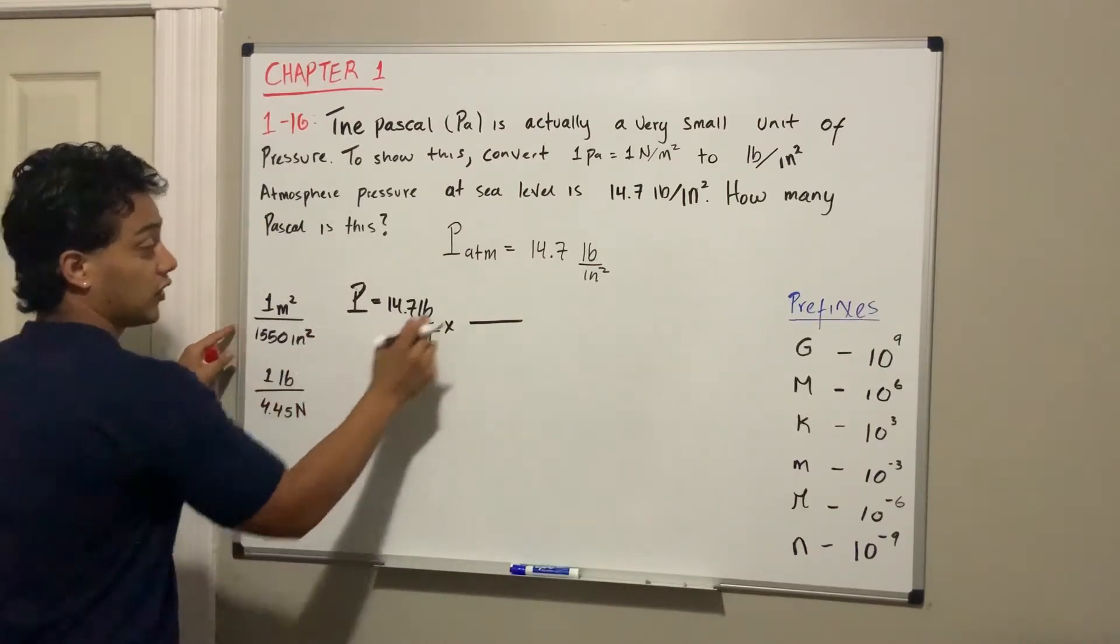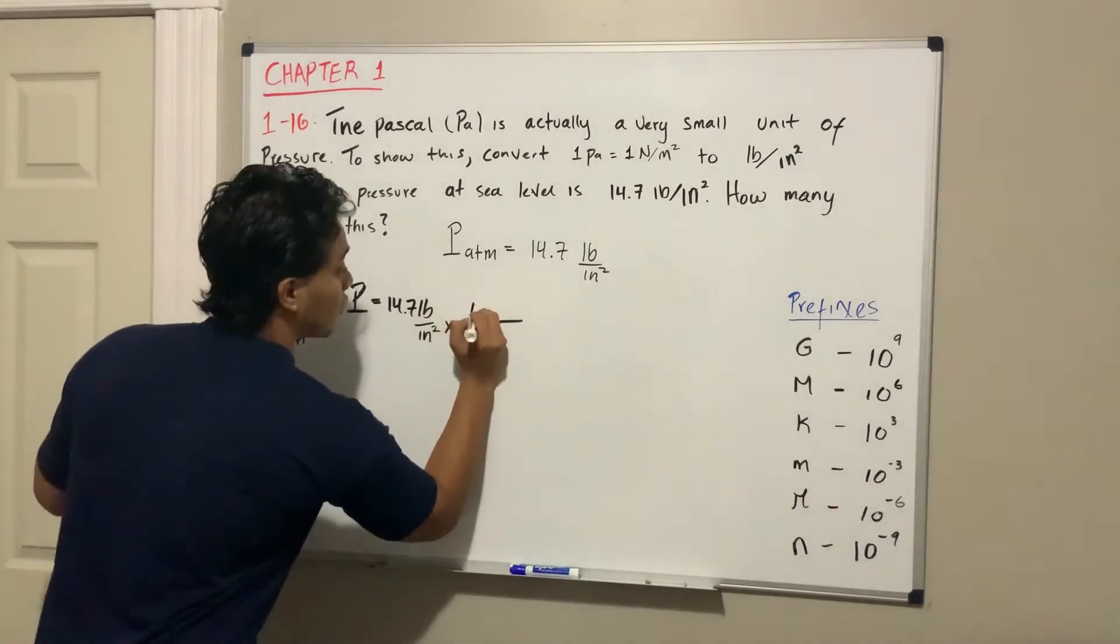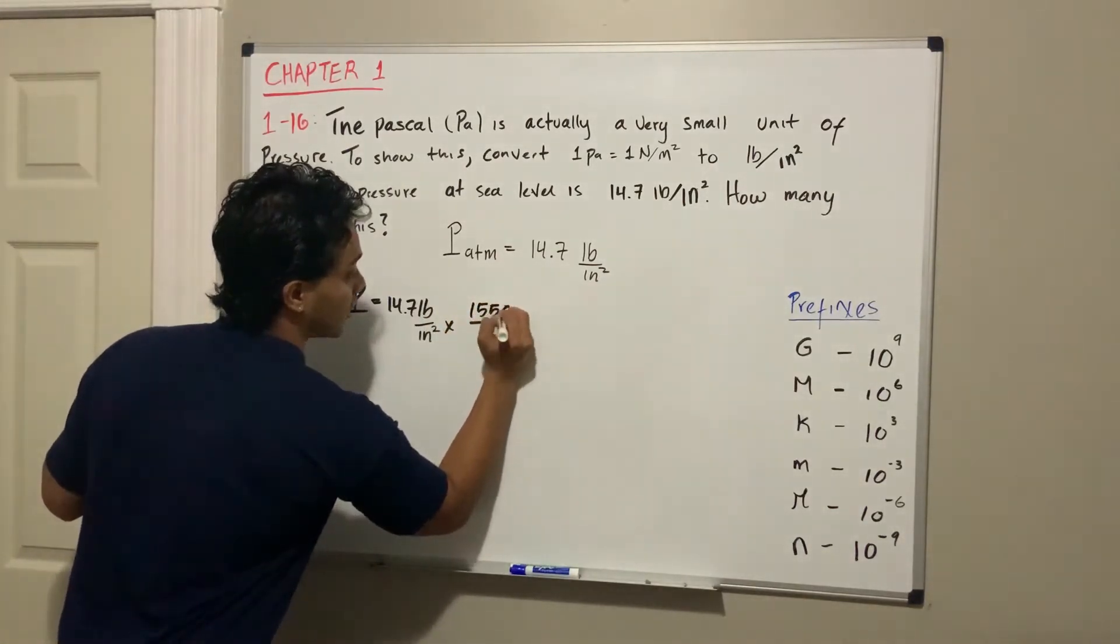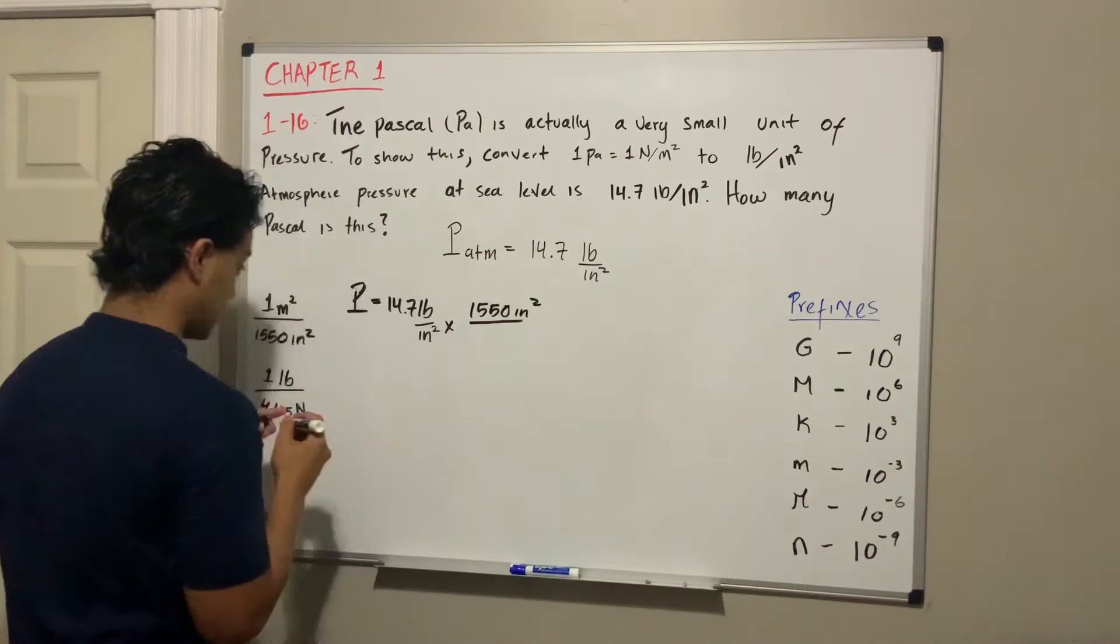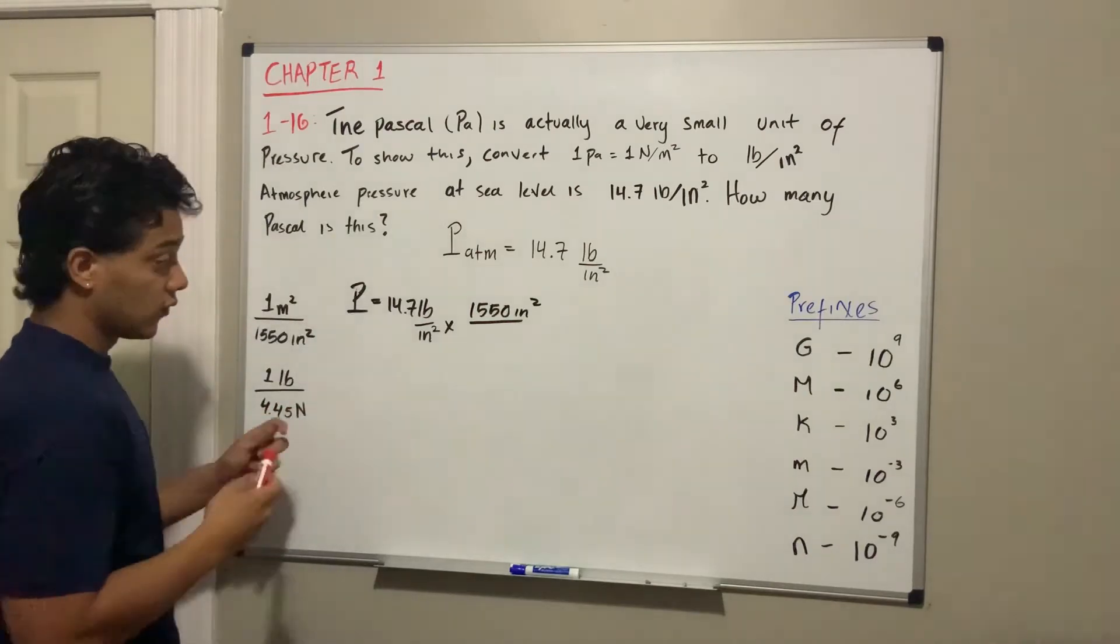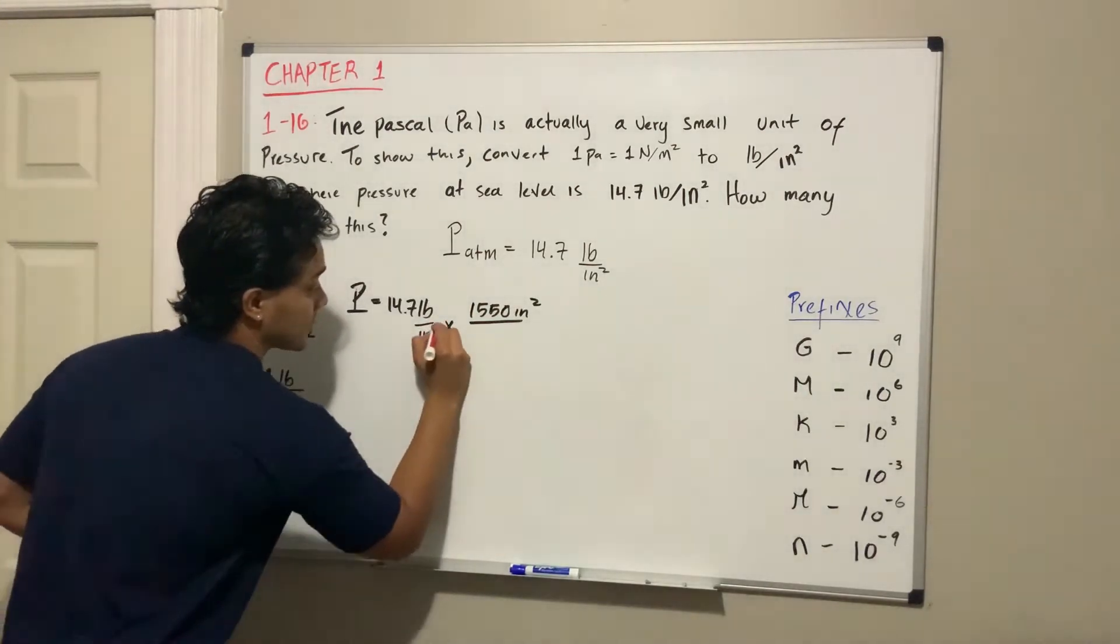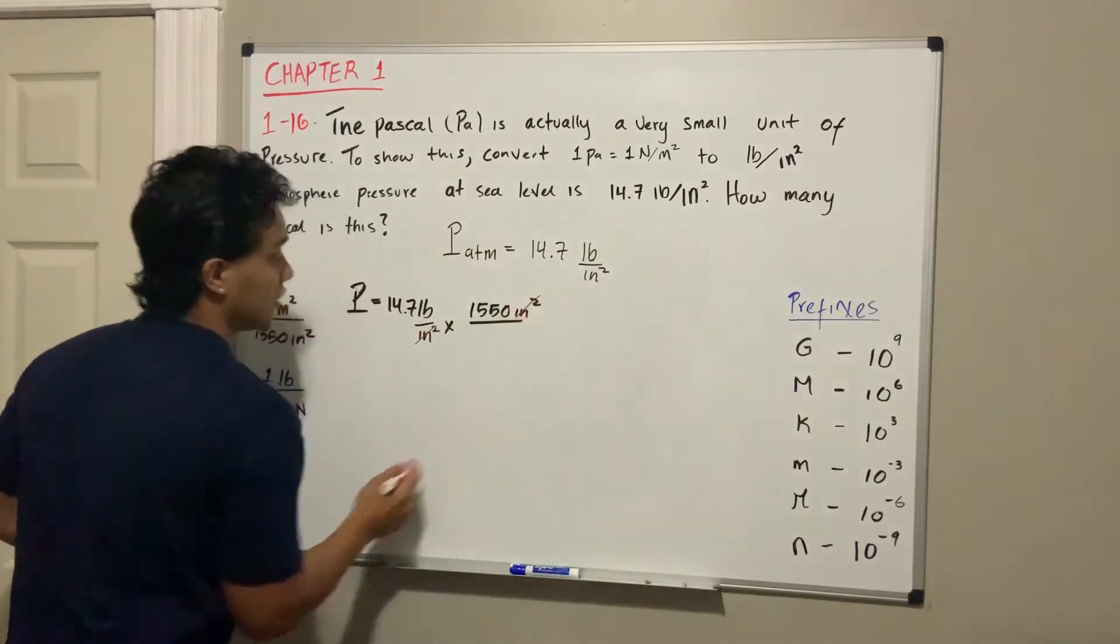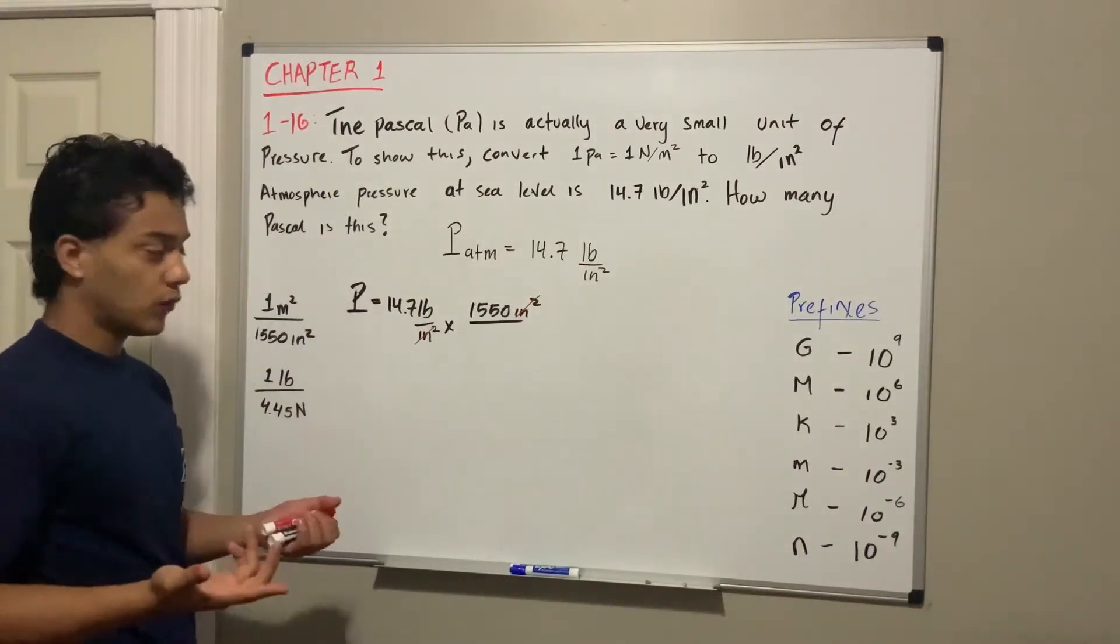Why am I going to put these numbers on top? Because if I have them on top, I can cancel the ones at the bottom with the ones on top. That way I get rid of the inches.